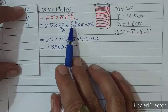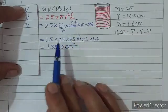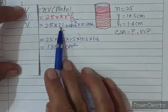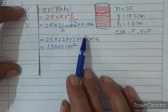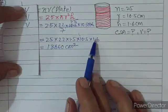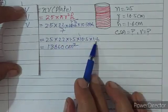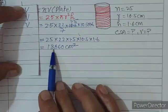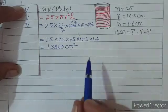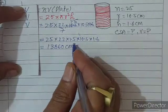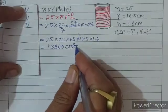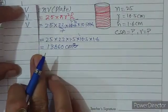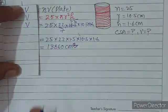Multiply करके solve करने पर volume = 13860 cm³। Volume निकल चुका है। अब CSA calculate करना है।